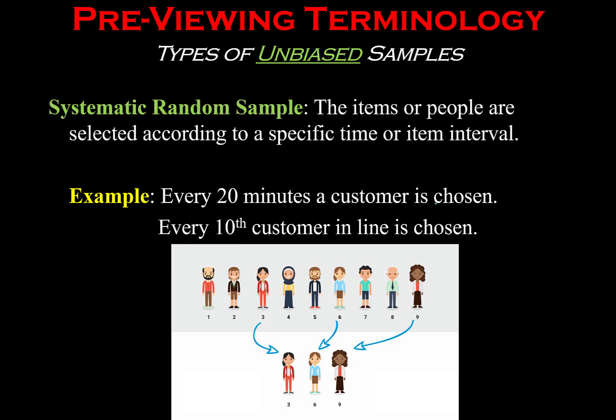Another method is to select objects or people on some sort of interval, which we call a systematic random sample. For example, if we are at a store, we could talk to the customer who comes in every 20 minutes. That next customer that comes in at the 20-minute mark is the person we select for our sample. This is random because we don't control who comes into the store — we don't know who is going to come in next at that 20-minute mark. You can also select every 10th customer, or as shown in an image, every third person.